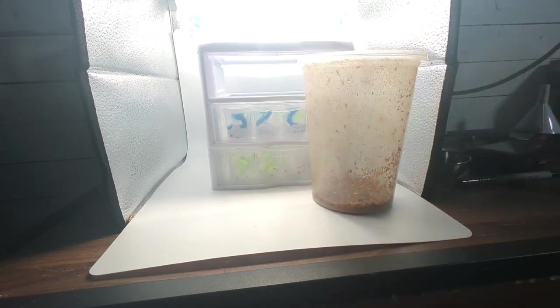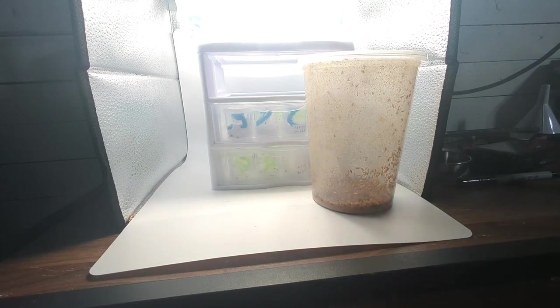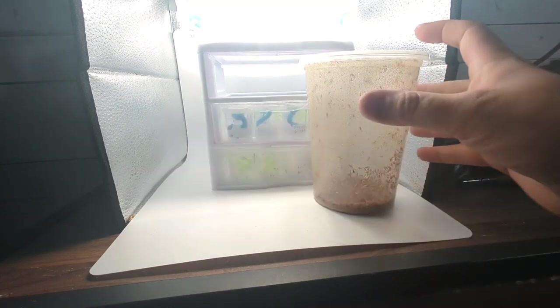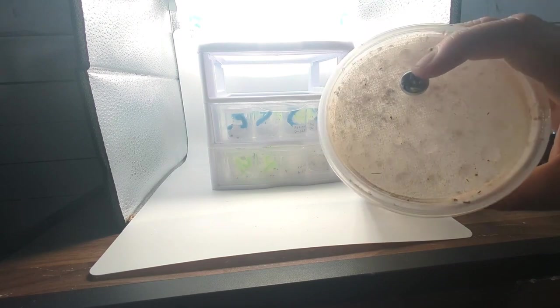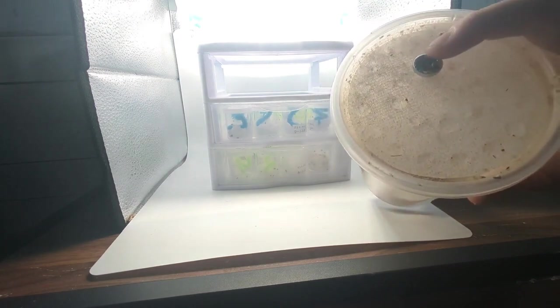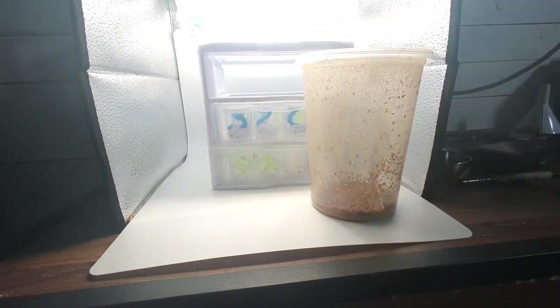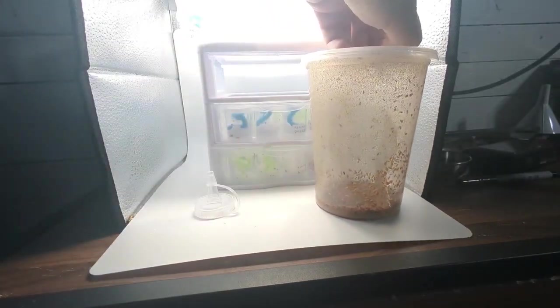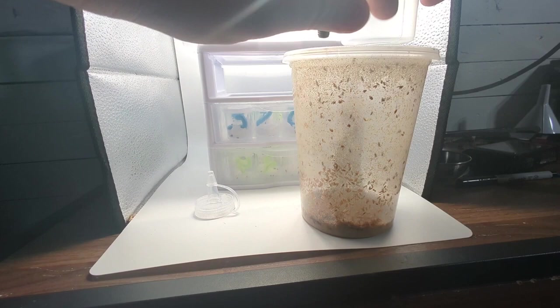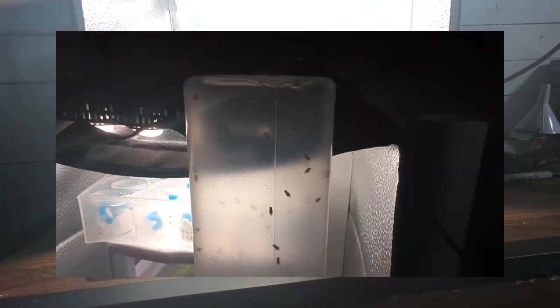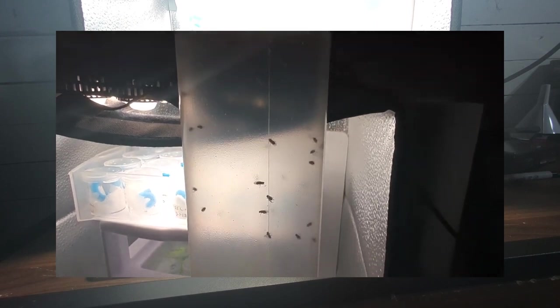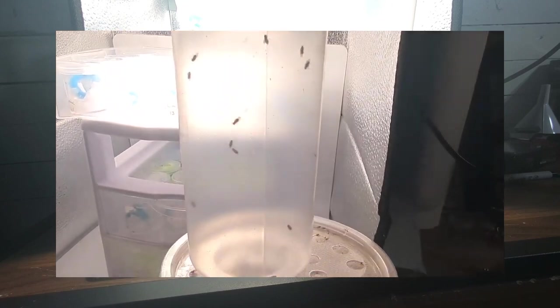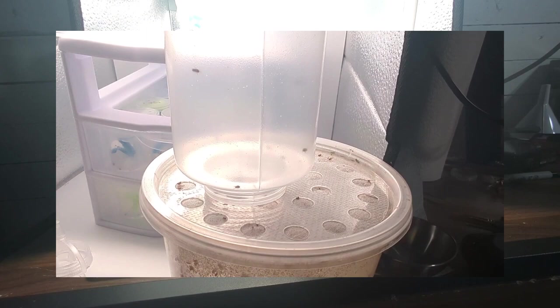The way I use what I use to feed is another Dollar Tree special, a condiment container. On the top of my fruit fly container, I've poked a hole through one of the little vents and just placed a bolt through it to act as a lid. So I'll unscrew the top of this, pull out the bolt, and then just stick the container on top of that, and the fruit flies will just naturally move up into the container.